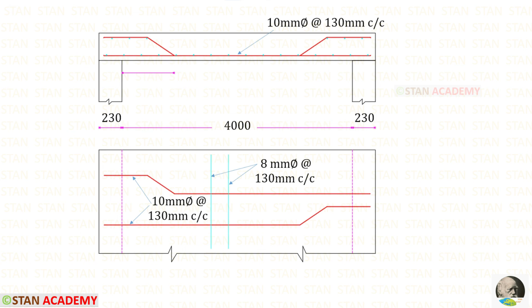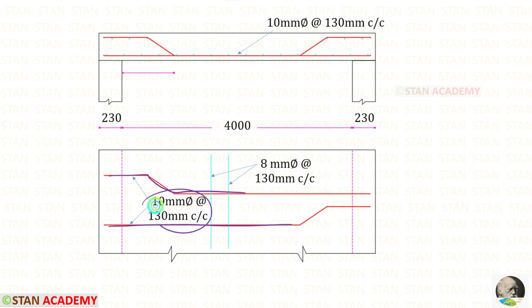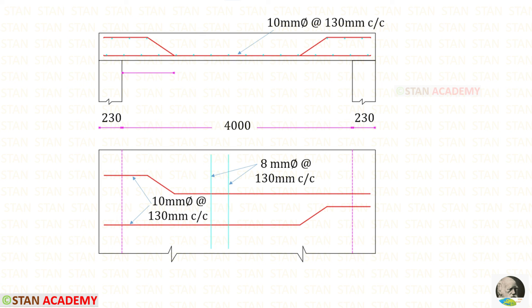Here you can see the reinforcement details. This is the plan and this is the cross section. You can see that the alternate bars are bent up. These are the main reinforcement bars and these are the distribution bars. Now we are going to end this session. Thank you for watching this video.